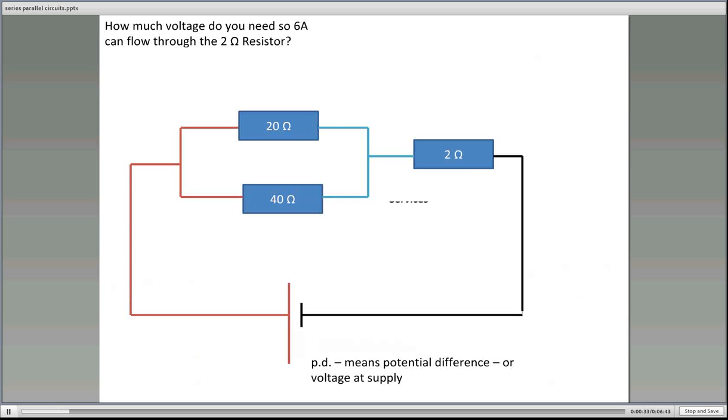Let's begin. Here's a series parallel circuit. We have a 20 ohm, 40 ohm in parallel with a 2 ohm resistor. Now PD means potential difference or the voltage at the supply. Now the question is actually asking how much voltage do you need so 6 amps can flow through the 2 ohm resistor?